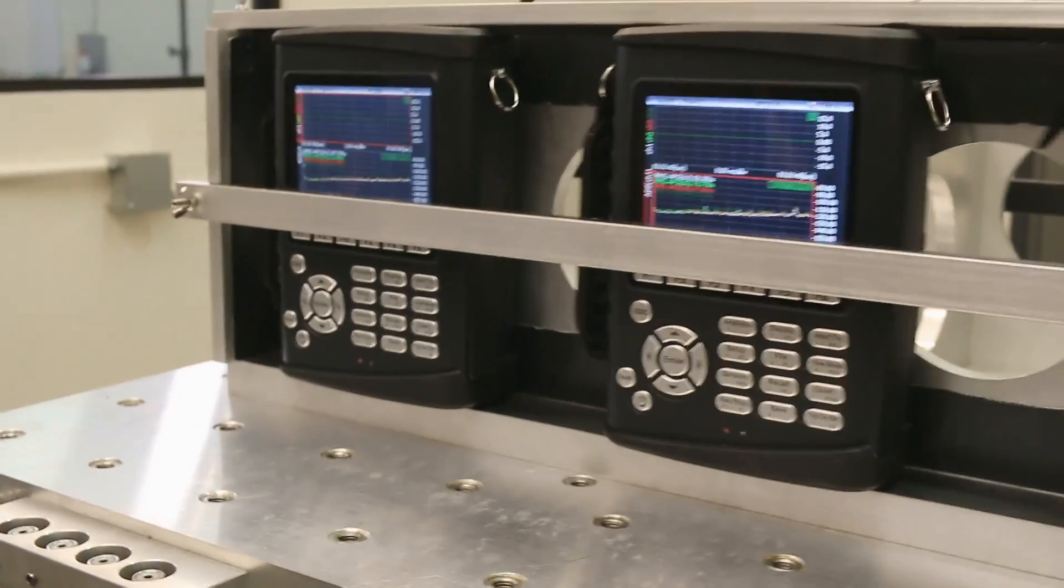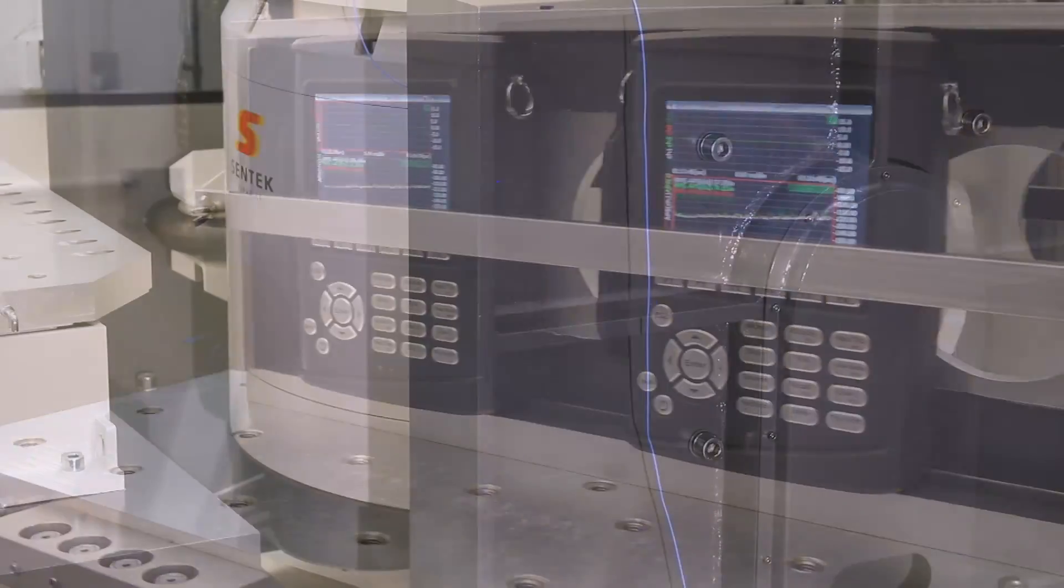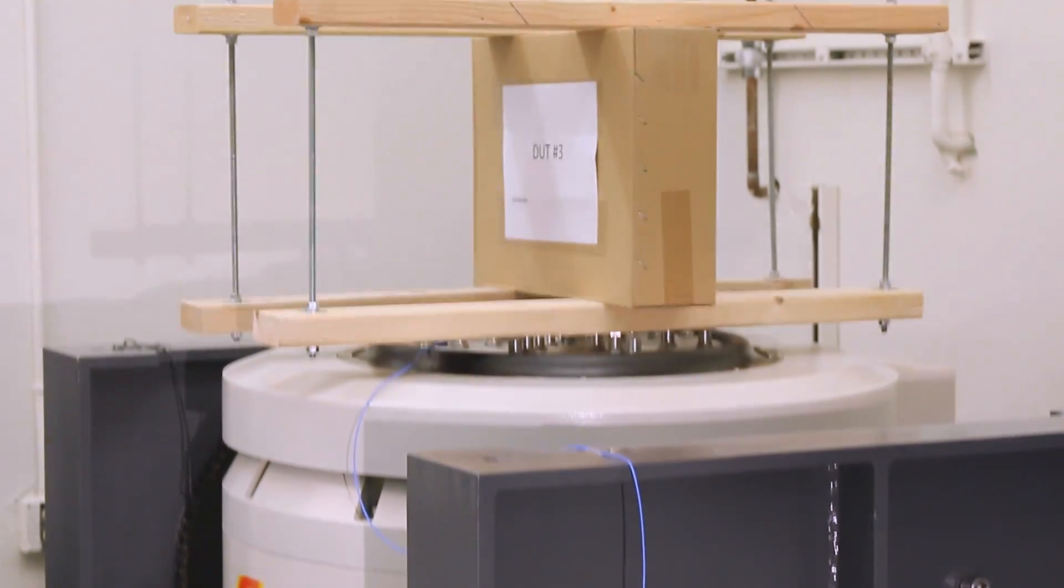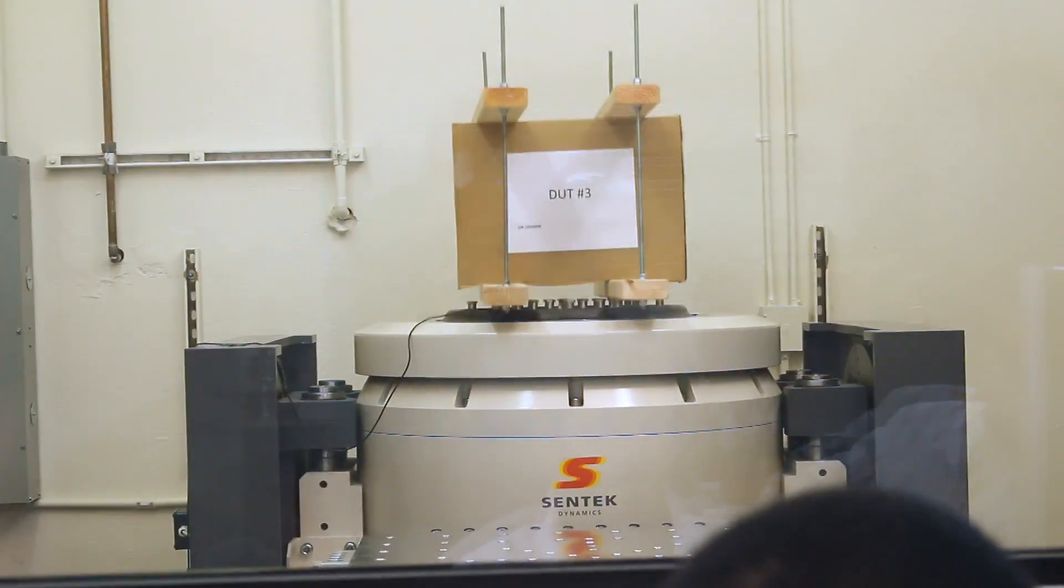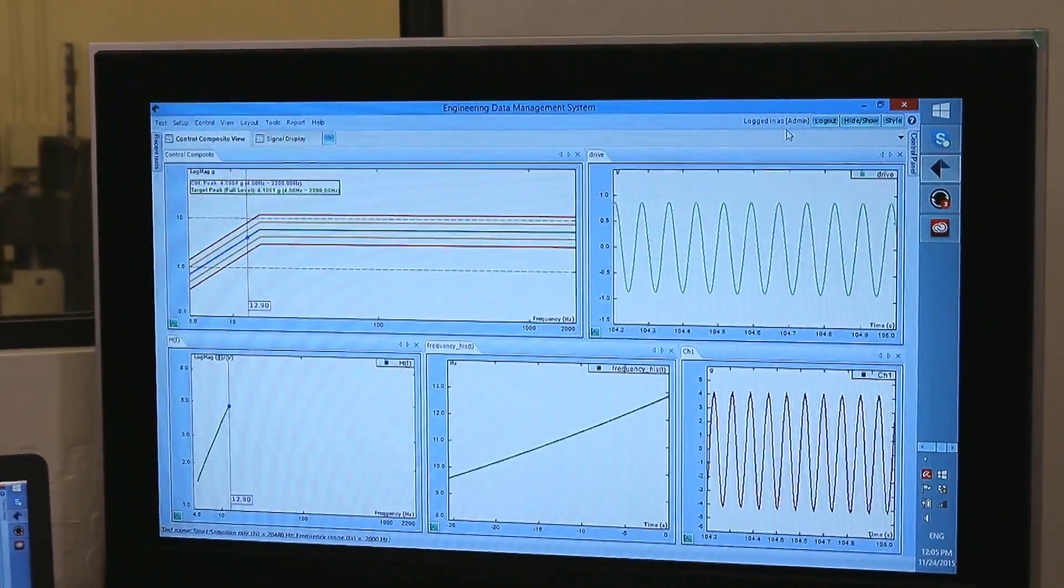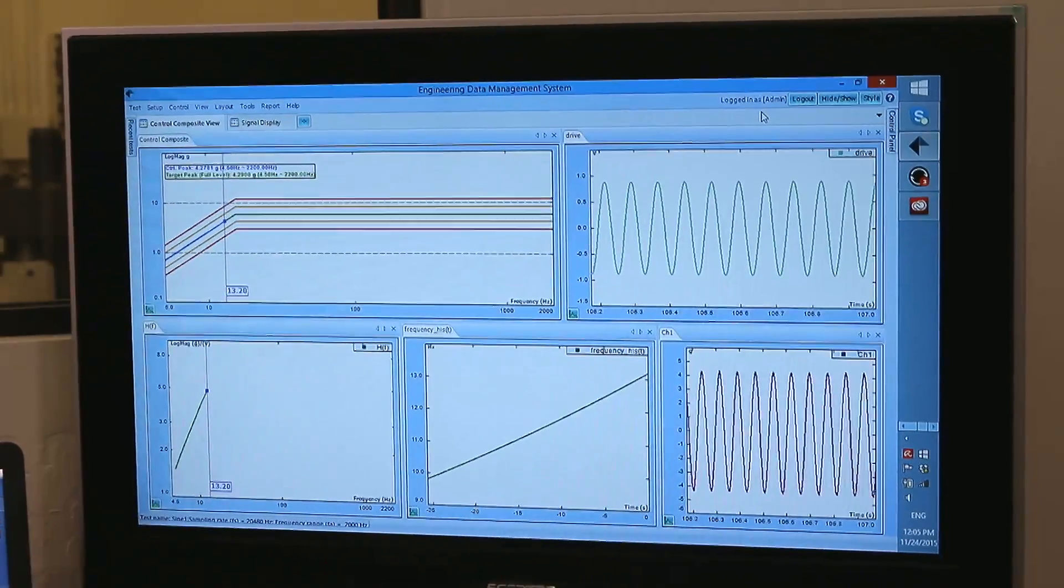The swept sine control process consists of generating a sine wave output to excite the device under test. When the control signal input amplitude is detected, the detected level and the reference amplitude are compared and the drive signal amplitude is updated appropriately.